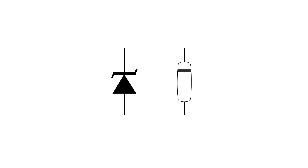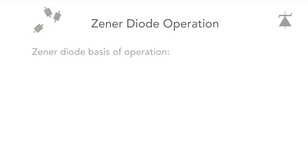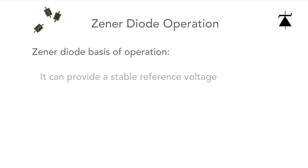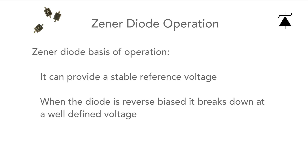In electronic circuits, the Zener diode or voltage reference diode uses a specific circuit symbol — the basic diode symbol with a couple of extra bits to distinguish it from other forms of diode. The basic principle is that it can be used to provide a stable voltage because when it's reverse-biased, it breaks down at a specific voltage.